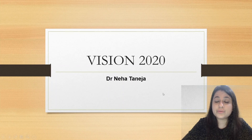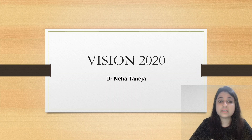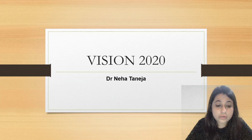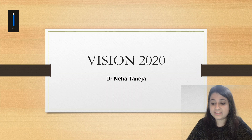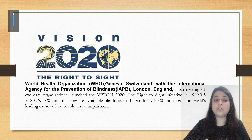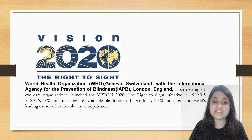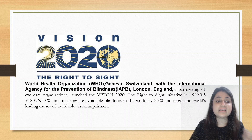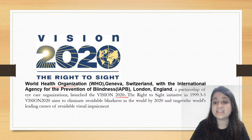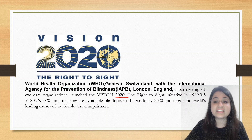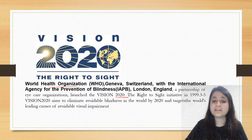Welcome back to another very important topic: Vision 2020. A lot of MCQs and questions come from this topic, so let us try to understand it. First of all, who launched it? It was launched along with the International Agency for Prevention of Blindness, England — a partnership of eye care organizations — who launched the Vision 2020 'Right to Sight' initiative in 1999.